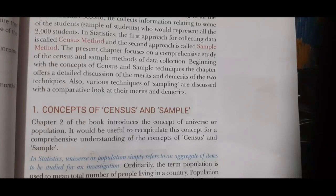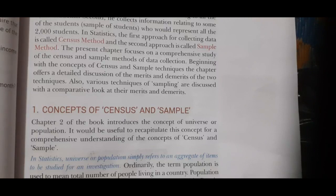The next method is mail questionnaire, also called mail interview. Under this method, the investigator makes a questionnaire pertaining to the field of investigation, which is sent to the respondent along with a covering letter. The respondents are assured of the accuracy of the information provided by them. A stamped self-addressed envelope is also included for returning the questionnaire by post. This method is suitable when the area of investigation is large and the respondents are literate.